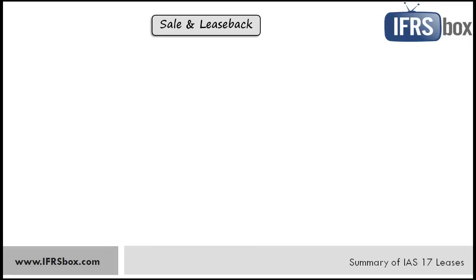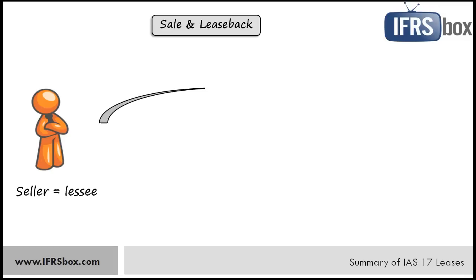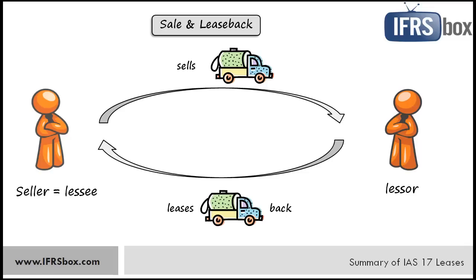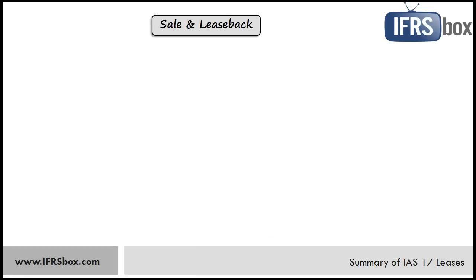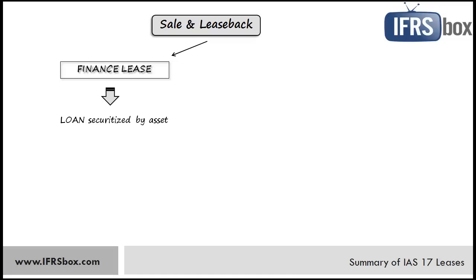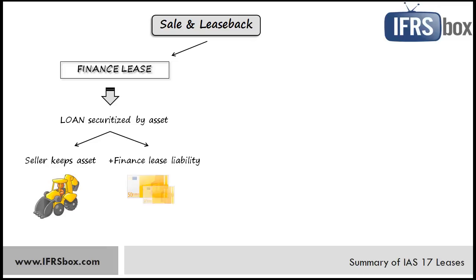Now let's take a look at sale and leaseback transactions. That's a transaction in which the seller sells an asset and then leases the same asset back — in fact, the asset does not move. The seller becomes the lessee as he takes the asset back under the lease, and the other party is the lessor. The accounting treatment strongly depends on the type of the resulting lease. If the resulting lease is a finance lease, then in fact the whole transaction is a loan securitized by the leased asset. The seller or lessee keeps recognizing the asset in its financial statements and also starts recognizing the finance lease liability, applying the accounting treatment as explained for finance leases.